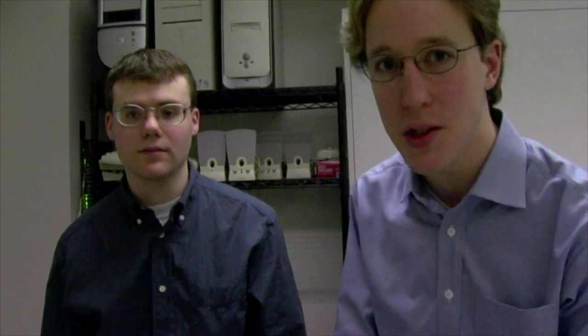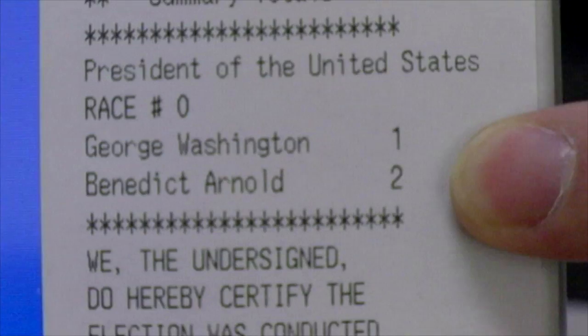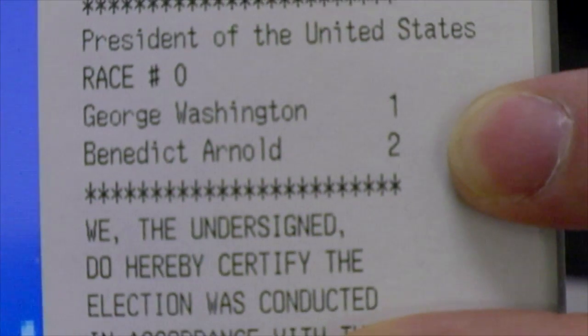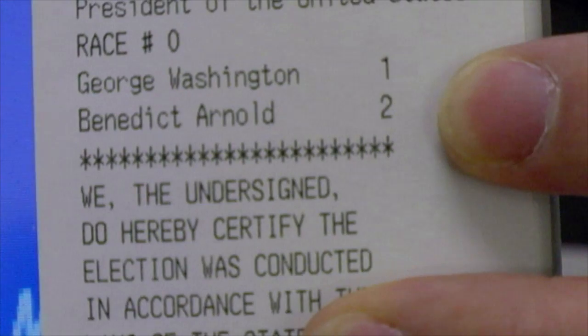Our demonstration vote-stealing software running inside the machine switched two of the votes from George Washington to Benedict Arnold. It switched all of the records, so there's no way to go back now and find out that the actual result was three votes for George.